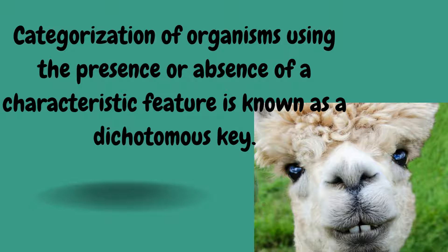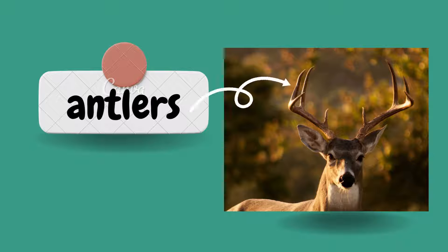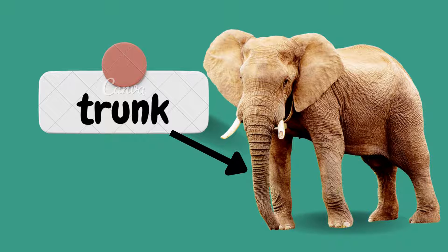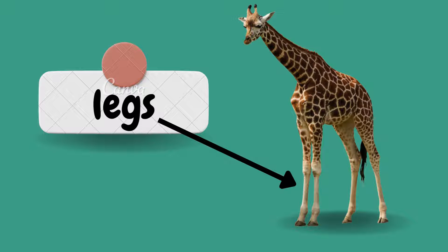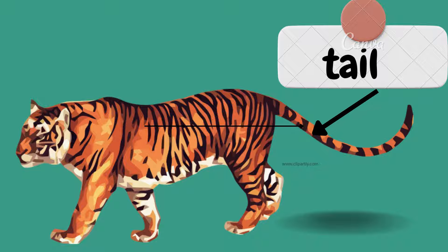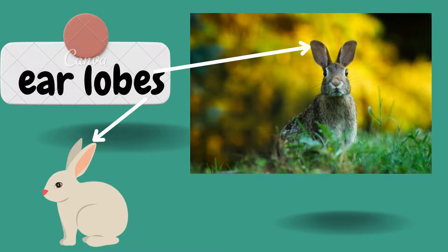It is more important to select suitable external features that can be easily observed. These are the features that can be easily observed: antlers, trunk in elephant, tail, legs, beak, wings, yellow color, and so on.